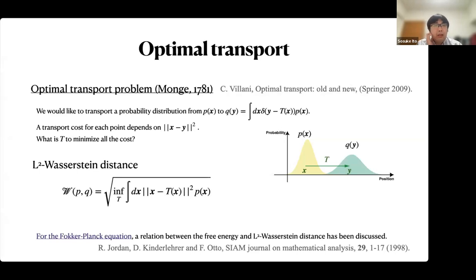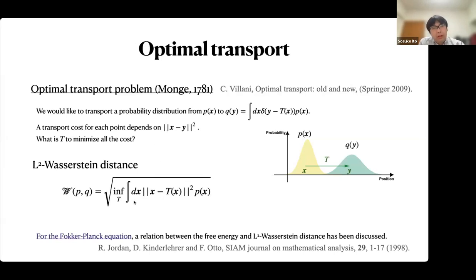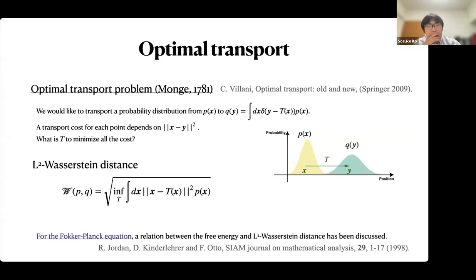By solving this optimization problem, we can define the Wasserstein distance in probability space. This quantity is very interesting in dynamics because it is strongly related to the free energy for the Fokker-Planck equation.